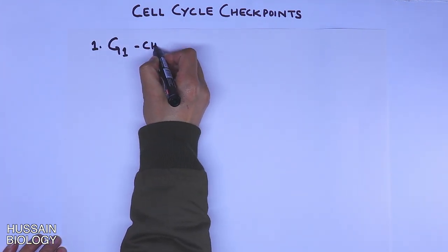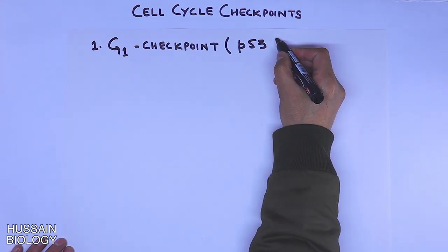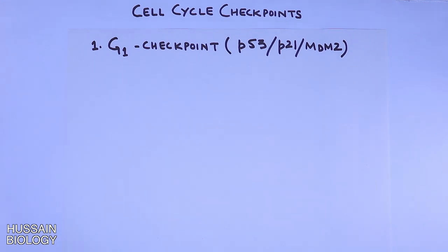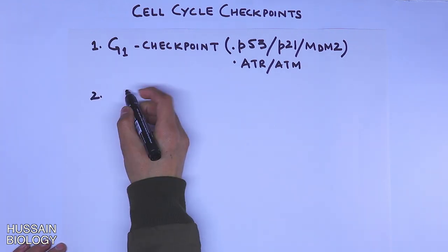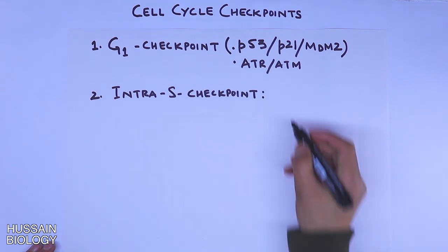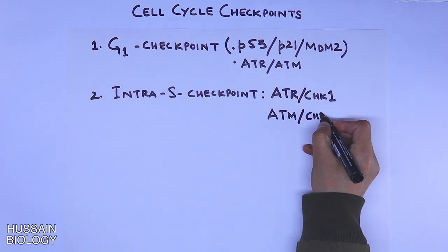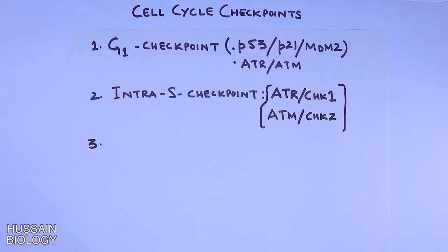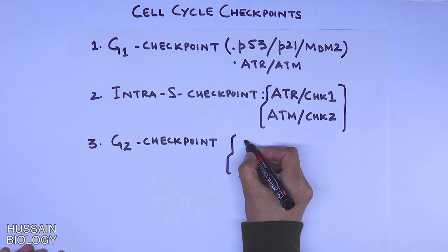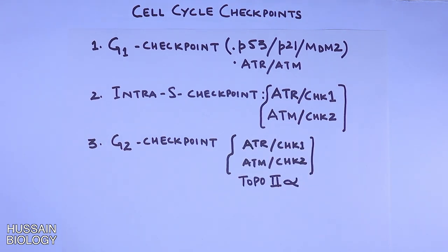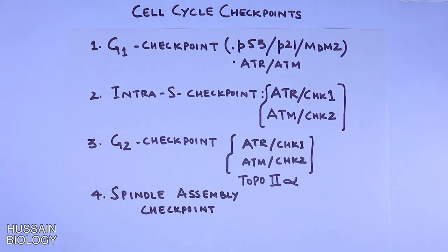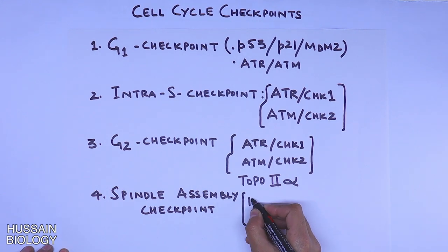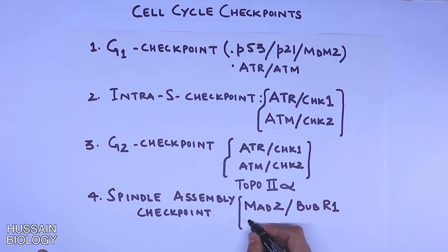The first checkpoint is the G1 checkpoint, mediated by proteins like p53, p21, and MDM2, initially activated through ATR and ATM proteins. The second is the intra-S checkpoint, mediated by ATR-CHK1 and ATM-CHK2 proteins. The third is the G2 checkpoint, mediated by ATM and ATR proteins. The fourth is the spindle assembly checkpoint (SAC), mediated by the Mitotic Checkpoint Complex (MCC), which includes MAD2, BUBR1, BUB3, and APC/C proteins.